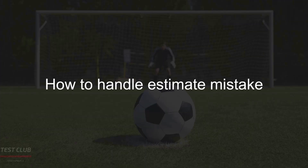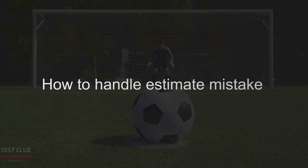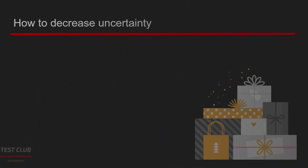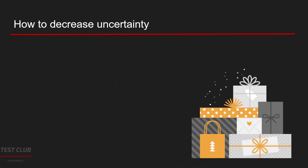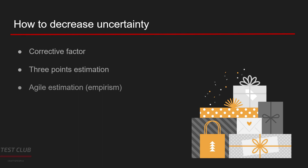So how do we handle estimation mistakes? Is there a way to handle them at all? There are three main strategies: corrective factor, three-point estimation, and agile estimation techniques.